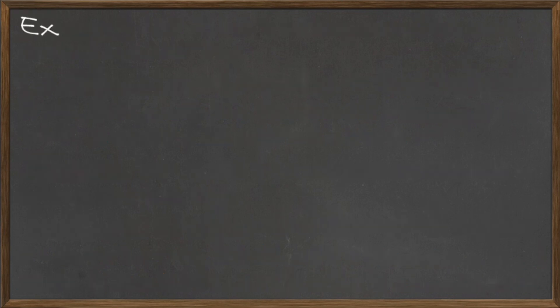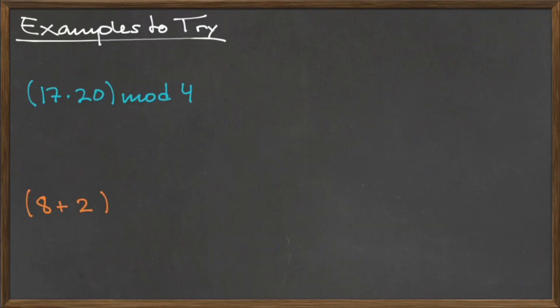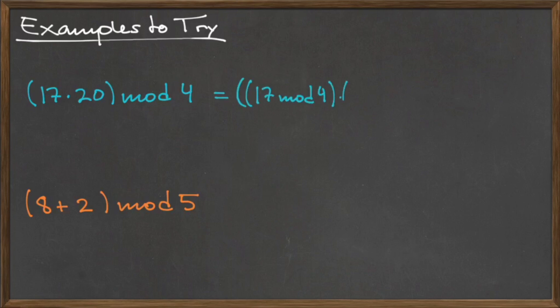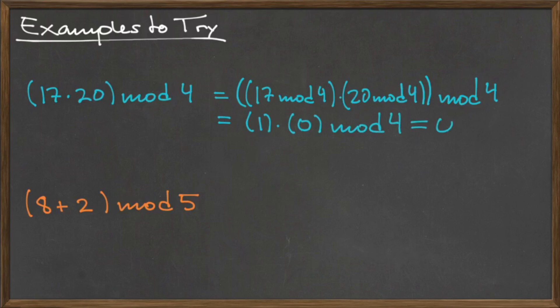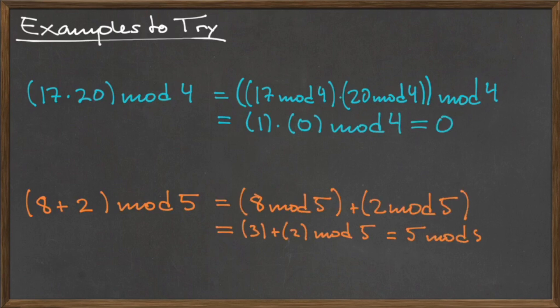Here are some examples for you to try on your own. This slide contains two examples using small numbers, and the next slide contains an example with a very large number. Use the theorems we just described to break the problem down into parts and simplify your answer. Here are the solutions to these two practice problems. In a moment, the next slide will be displayed and the answer will follow shortly after.